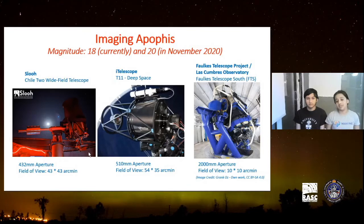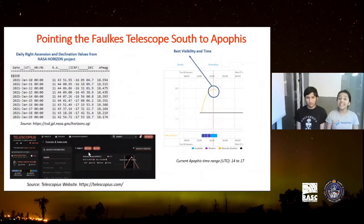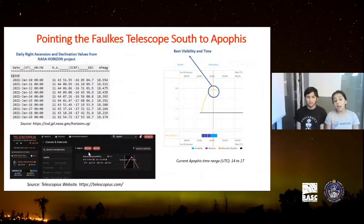Now I had a good telescope to take observations. It was time to actually take the picture of Apophis. But for that, I would have to know where to look, because I can't just tell the telescope to point at Apophis — I have to be more specific. I went on the Telescopius website where they gave me the right ascension and declination of Apophis. But they only updated it every day, and as the telescope had a relatively small field of view of 10 by 10 arc minutes, it might have disappeared by the time I used those coordinates. So I needed more accurate coordinates, which is when I found out about the NASA Horizons project, which gave me precise daily right ascension and declination coordinates of the asteroid.